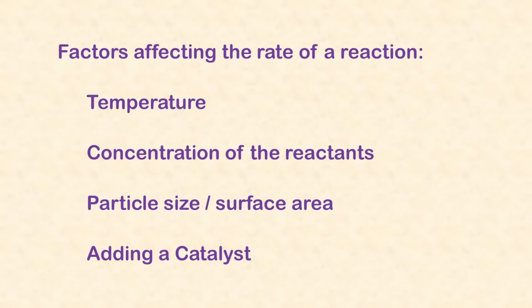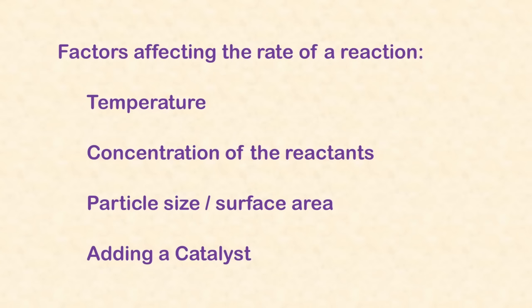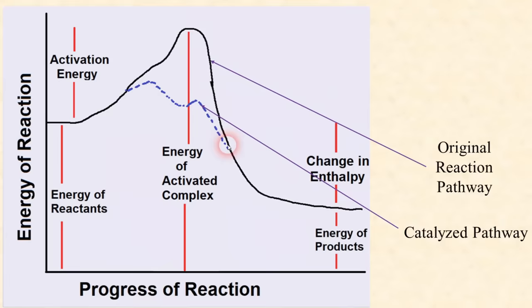To speed up a reaction, we can raise the temperature, use a smaller particle size, or raise the concentration of the reactants. We can also add a catalyst, which actually provides a completely different reaction mechanism and lowers the activation energy required for the reaction to take place.